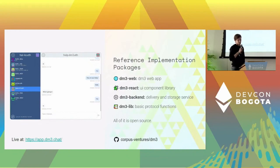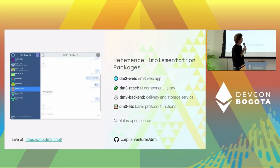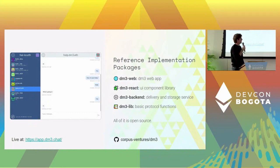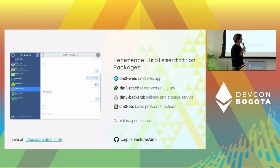Besides the protocol definition, we also have a reference implementation. The reference implementation consists of four different packages. We have the DiEM3 web app — as you can see in the screenshot on the left side, it's also available online at app.diem3.chat. Besides the web app, we have the React package, which can be used to include a DiEM3 widget into other apps. Then we have the backend package, which contains the delivery service. And finally, we have the DiEM3 lib, which contains basic protocol services.